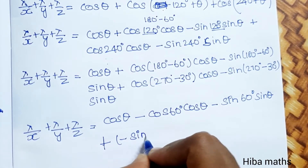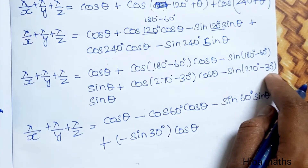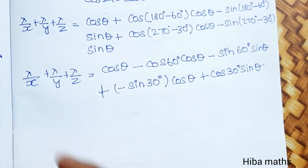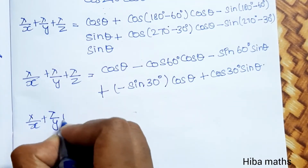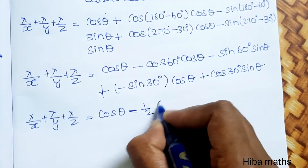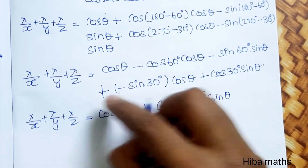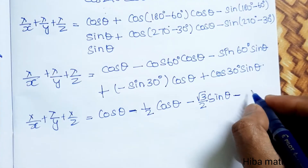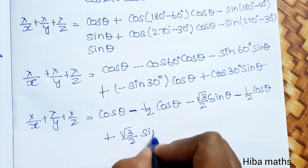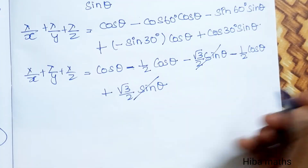Substituting values: sin 30° = 1/2 and cos 30° = √3/2. The √3/2 · sin θ terms cancel out. After cancellation, the remaining terms on the left-hand side become: cos θ − (1/2)cos θ − (1/2)cos θ. The λ terms on the right become λ(1/x + 1/y + 1/z).